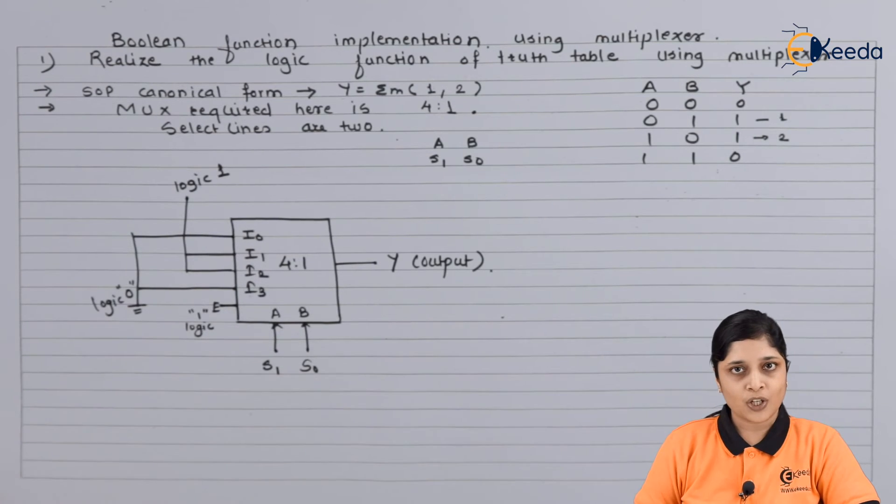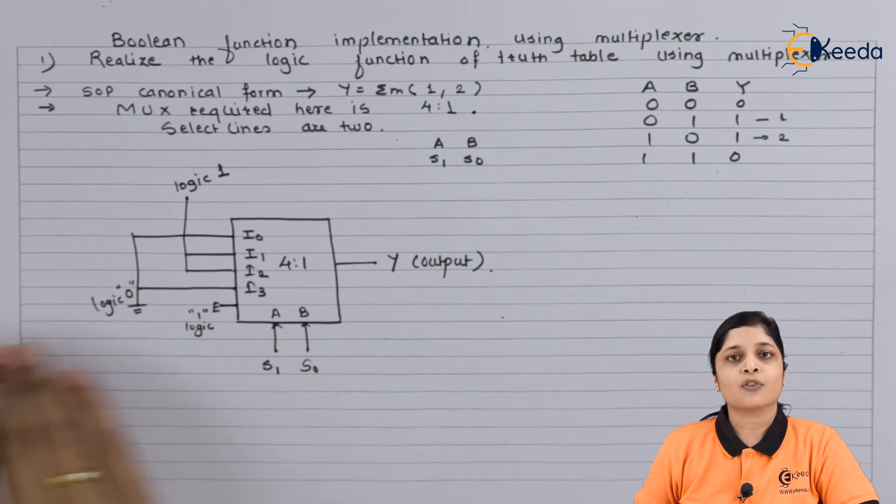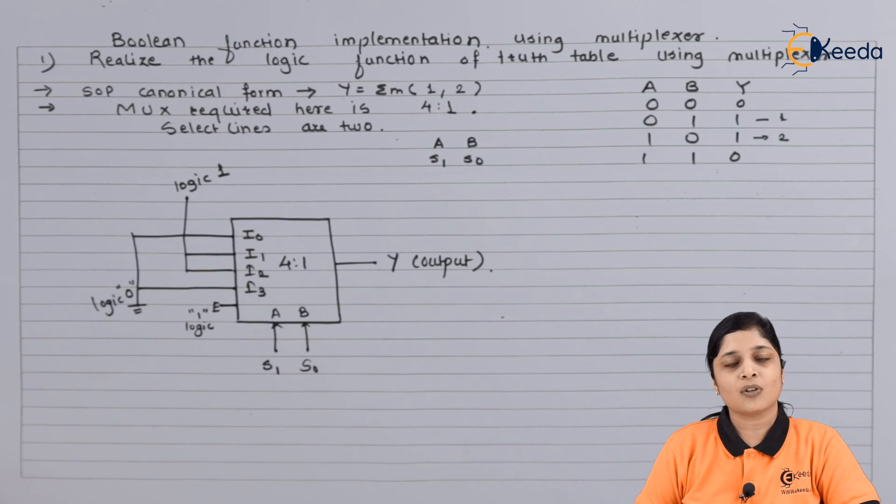Always E bar equals one, because whenever enable terminal is one then only mux will operate, otherwise it will not operate. We can also assume E as one because we are drawing this diagram, means it is always in working condition.